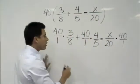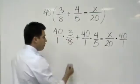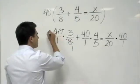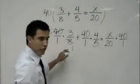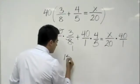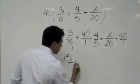Now, let's go ahead and cross-cancel. 8 goes into 40 5 times. So, now you would just do 5 over 1 times 3 over 1 would just give you 15 over 1 plus,